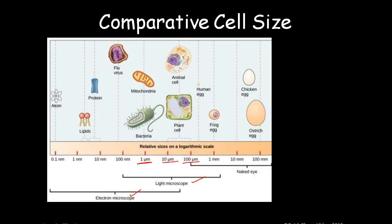As the size of the cell increases, the various organelles in the cell also increase. To help the existing organelles, transportation structures are there to help in movement of materials towards the various organelles. So as the cell size increases, the transportation structures also increase in the cell.